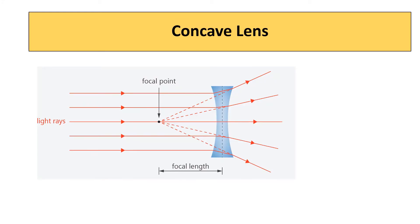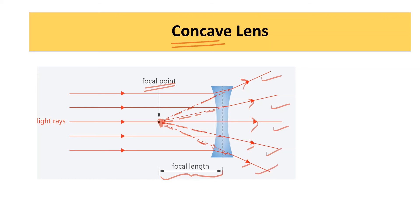In this concave lens, the incident light rays are diverging after refraction. If you extend these diverging rays backward, you can see they meet at a point — that is the focal point. The ray appears to diverge from the focal point. The distance between the focus and the optical center is called the focal length. As these rays are diverging, the concave lens is called a diverging lens.